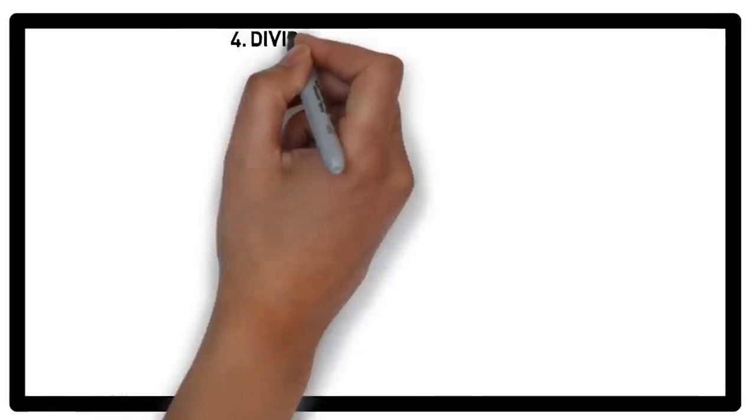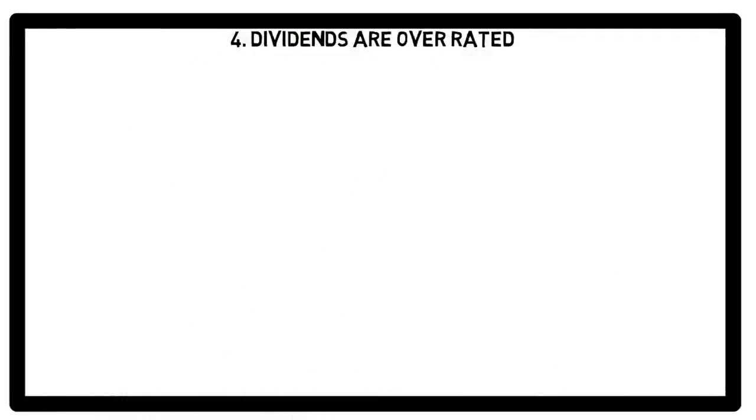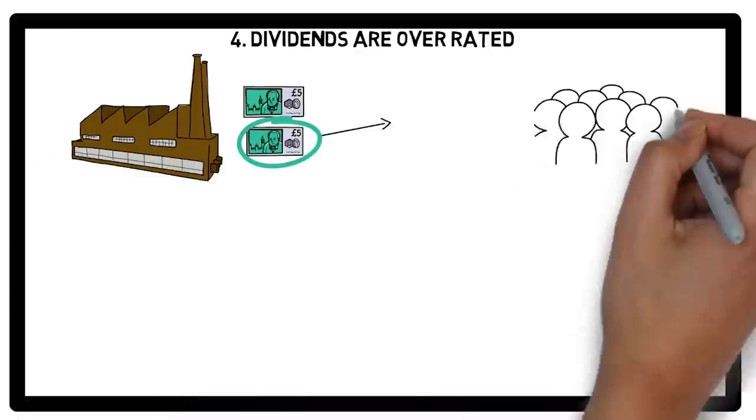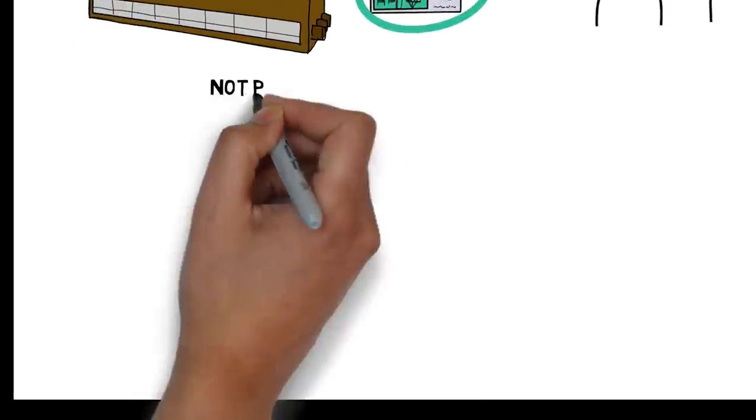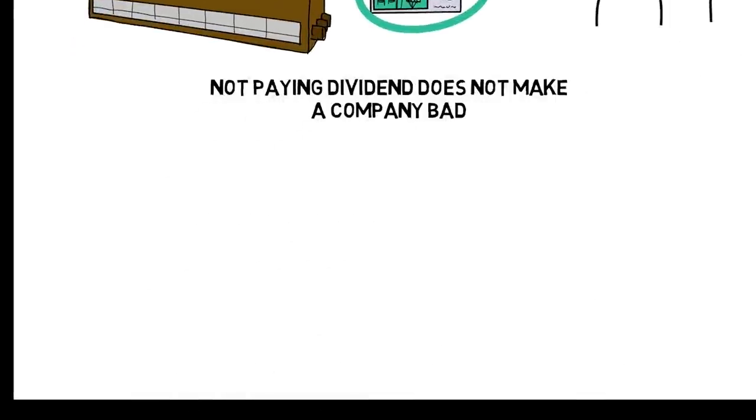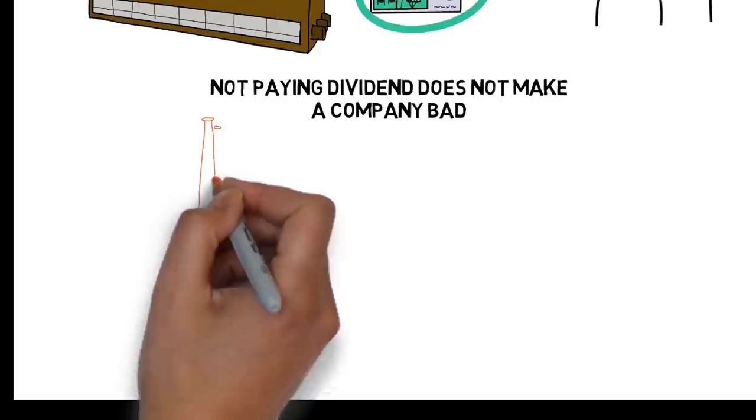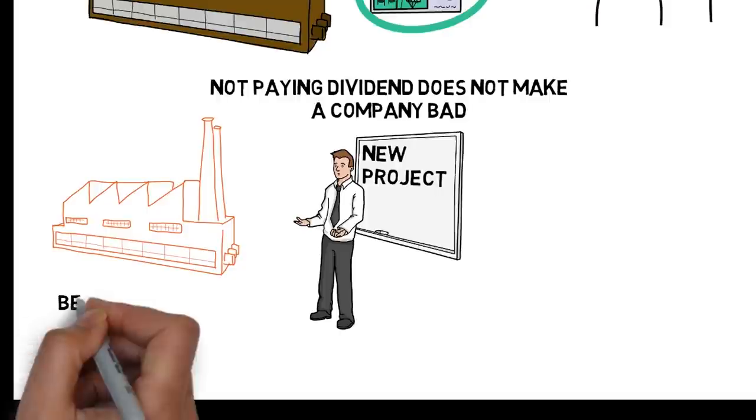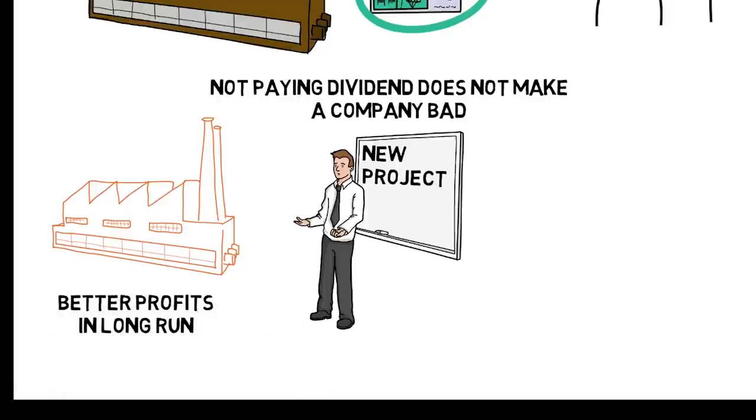Lesson number four: The dividends are overrated. When a company distributes part of the profit to its stockholders, it is called dividend. A company which is not paying dividends is not necessarily a bad company. It might signify that the company wants to set up a new plant, invest in a better project. This will make a company generate better profits in the long run.